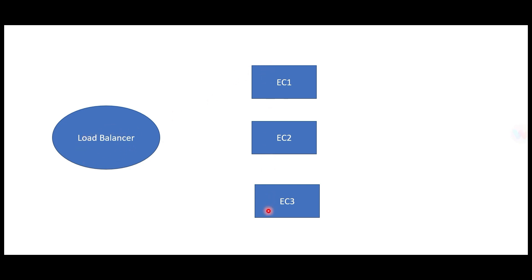You started your application and these three EC2 instances can handle 100 users. One day suddenly those 100 users become 500 users. Each instance was able to handle 50 requests each, so the maximum was 150 requests. Now with 500 users, the load balancer sees that all its resources are busy.